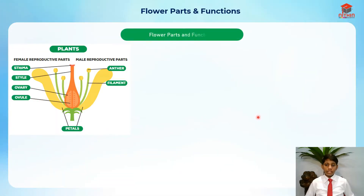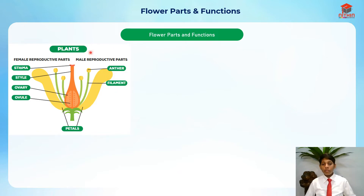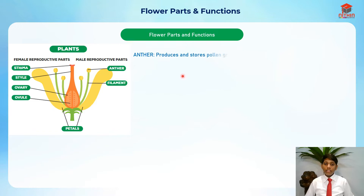The flower has male parts and female reproductive parts. For the male parts of the flower, there is the anther and the filament. For the female reproductive parts of the flower, we have the stigma, style, ovary, and ovule. These parts are color-coded by blue and red color.